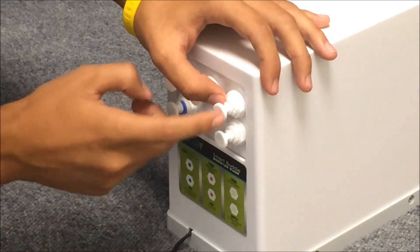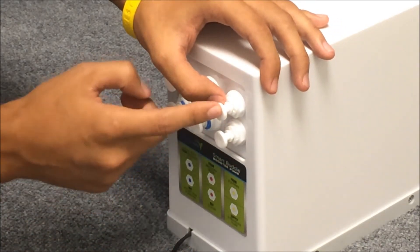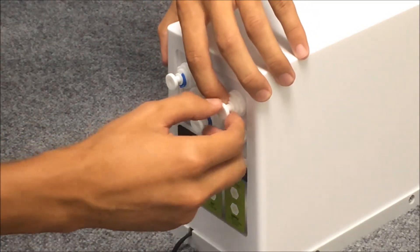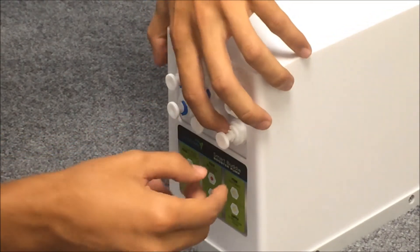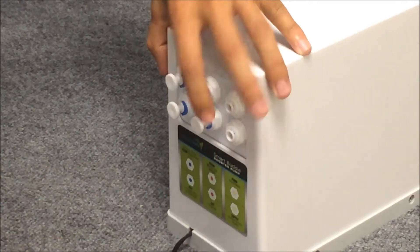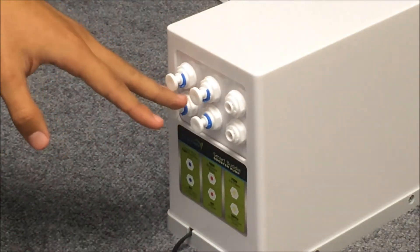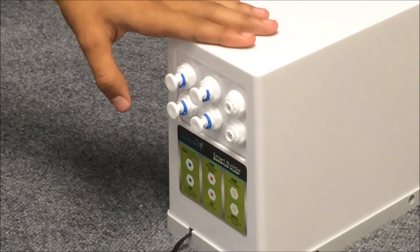Now to get rid of this white plug, we're going to push the white collar down and pull it out, push it down, pull it out, and you're going to want to remove the remaining four. Once you've removed those four, you're ready to start plumbing.